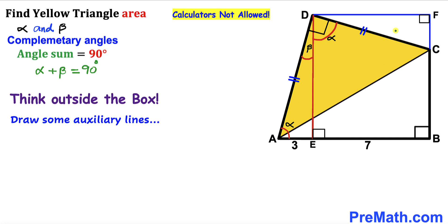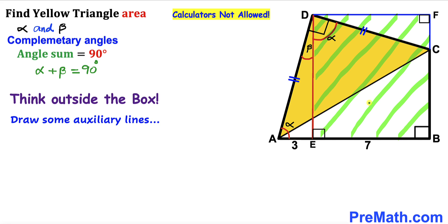In the next step, I have drawn right triangle CFD by extending line BC all the way to point F and then connecting points D and F. Now let's focus on rectangle EBFD.